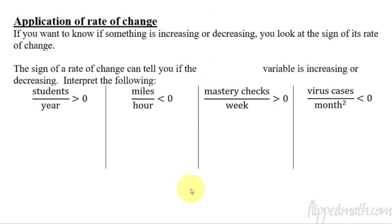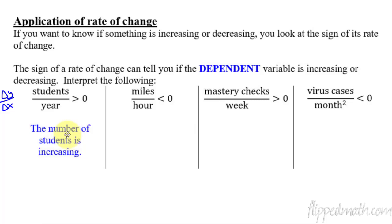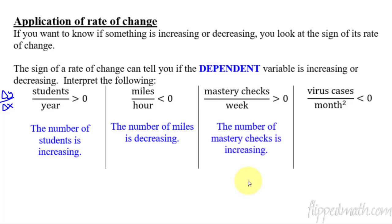Our last topic is the application of a rate of change. When we want to know if something is increasing or decreasing, you look at the sign — positive or negative — of the rate of change. The sign of a rate of change tells you if the dependent variable, the y values, is increasing or decreasing. For example: if students per year is positive, the number of students is increasing. If miles per hour is negative, the number of miles is decreasing. If mastery checks per week is positive, the number of mastery checks is increasing.